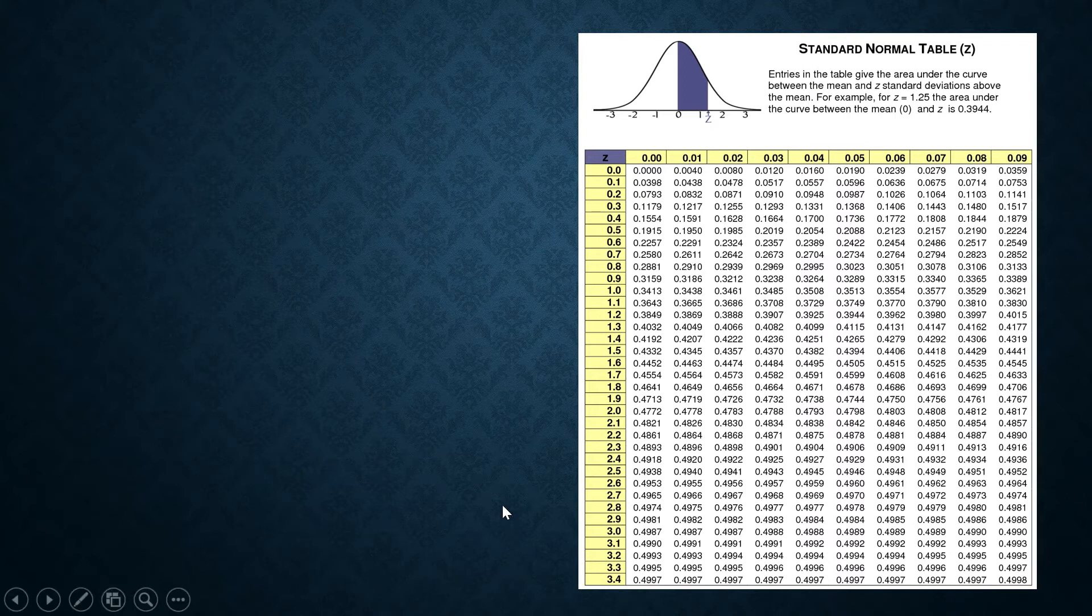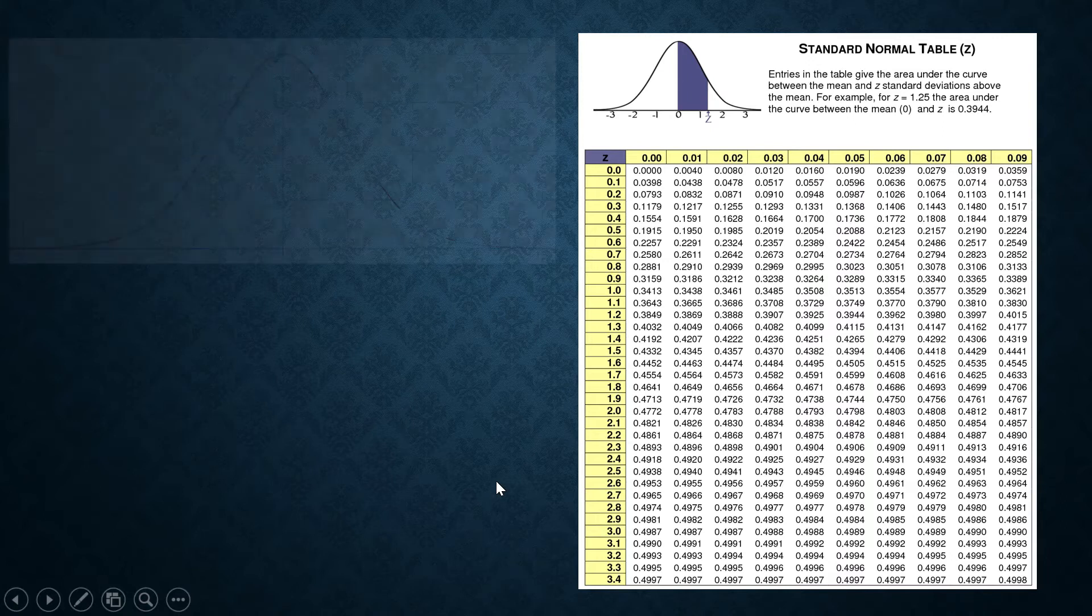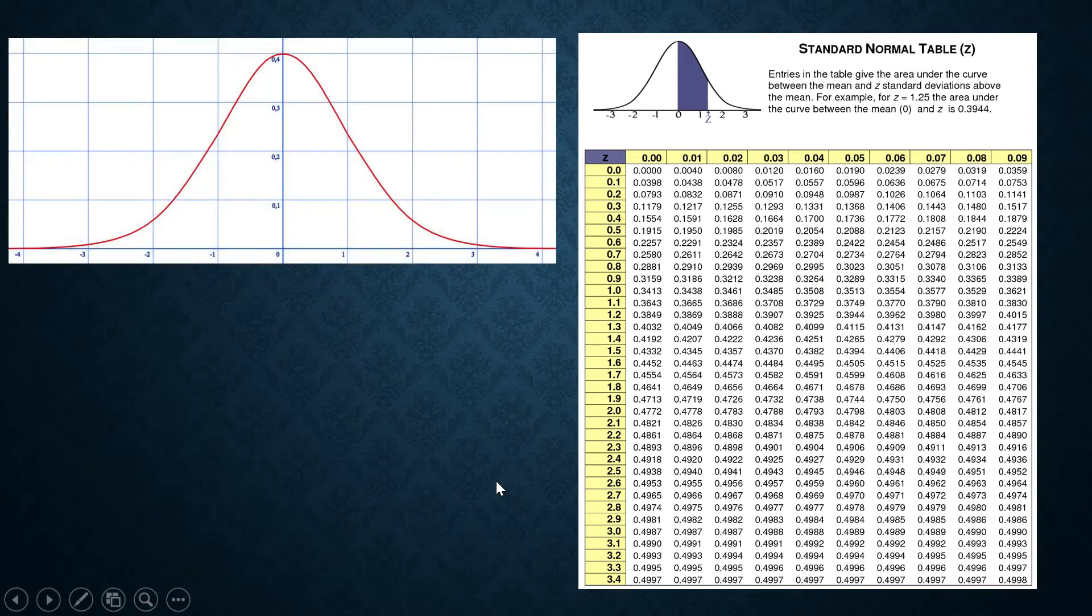So the numbers inside the table are actually areas. Areas of regions. So these are areas of the regions under the curve in a particular interval. So I will illustrate how to use this using examples.